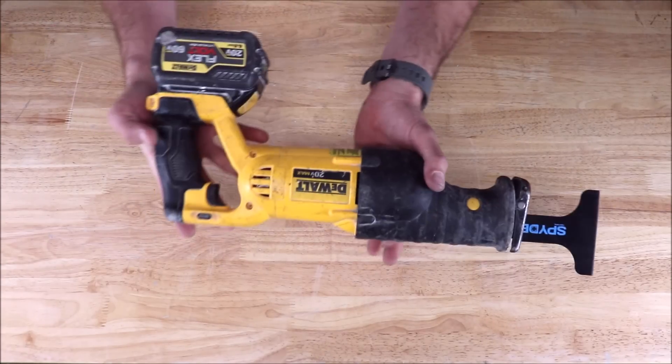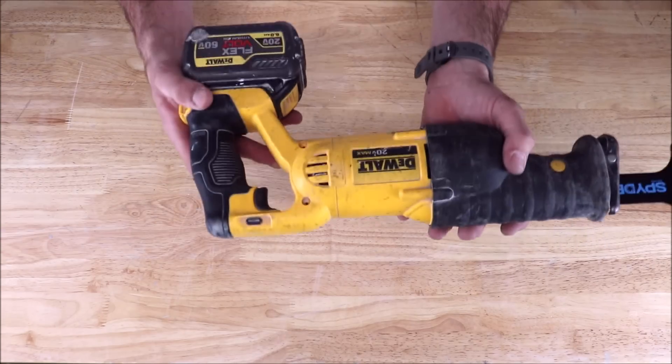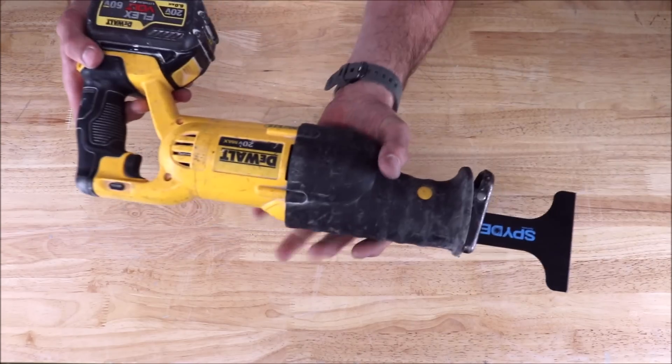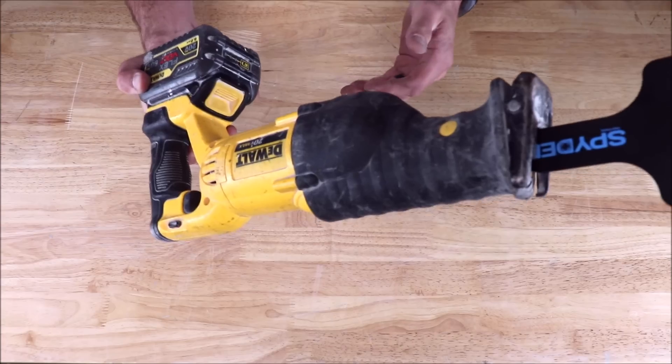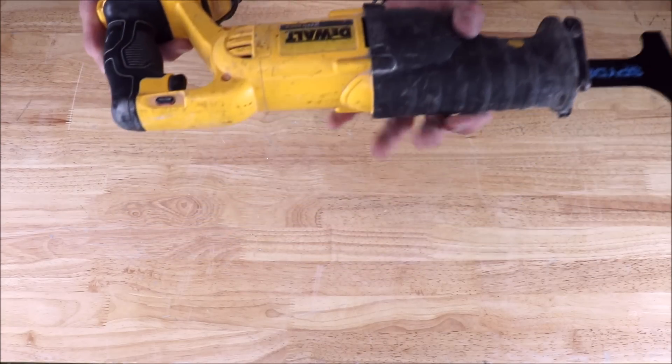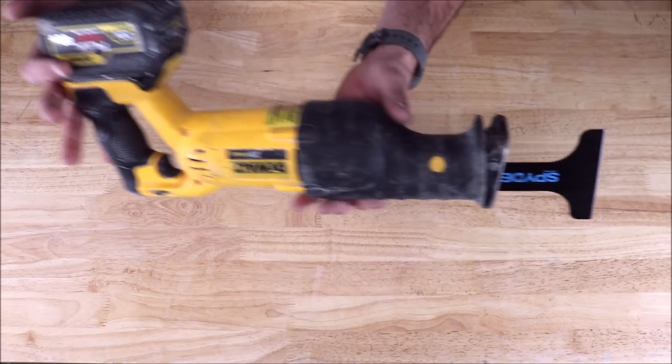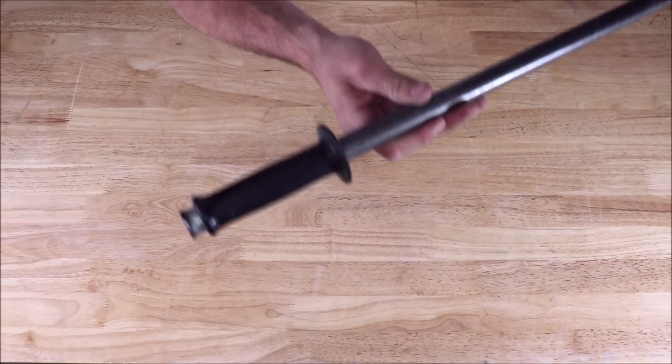When attempting to remove your thinset mortar or glue, this recip saw can easily kick back, hurting your wrist. When you're trying to remove your thinset mortar or glue, it can also damage your subfloors when removing glue.